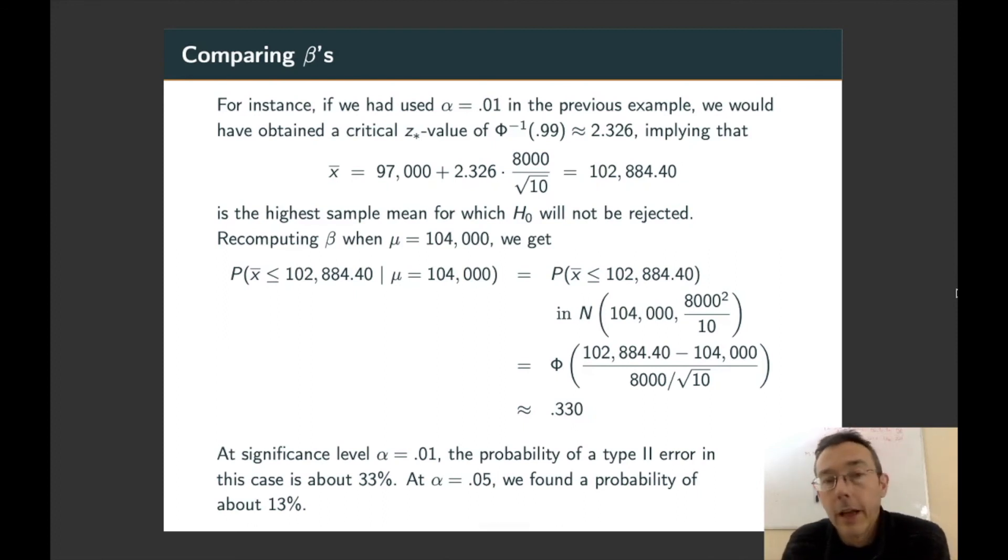So let's see this in action in this previous example. Suppose in the data scientists example, we had used a significance level of 0.01. So we are really trying to avoid having a type 1 error. In that case, using critical regions, we would have got a critical z-star value of 2.326. And doing the same calculation as before to get x-bar, taking the hypothesized population mean, adding the z-star times sigma over the square root of n, we get $102,884.40. That's the highest sample mean for which H-naught will not be rejected.